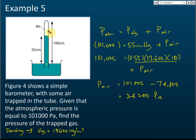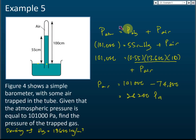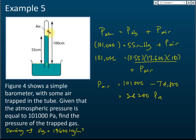Therefore the air pressure equals 101,000 minus 74,800, which is 26,200 pascal. That is the pressure of the trapped air. When there is air trapped in the tube, the pressure at that point equals the mercury column pressure plus the air pressure, and this equals the atmospheric pressure.